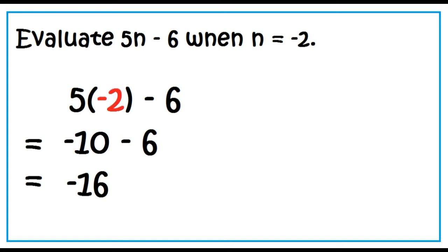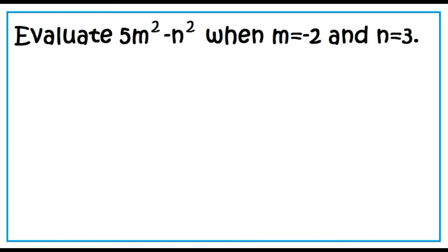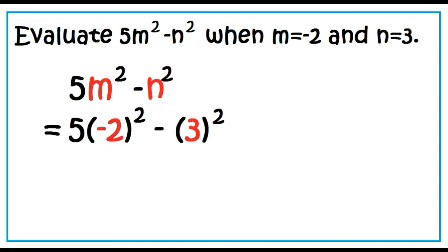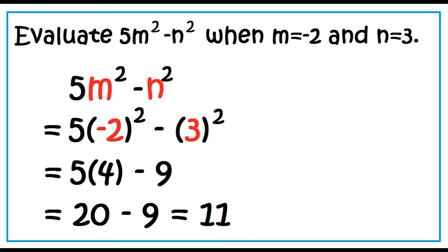Here's an example with two variables. Evaluate 5m squared minus n squared when m equals negative 2 and n equals 3. Substitute negative 2 for m and 3 for n, then perform the indicated operations. Simplify powers first: negative 2 times negative 2 is 4, and 3 times 3 is 9. The result is 5 times 4 minus 9. 20 minus 9 is 11.